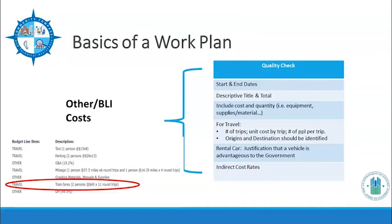Next, we have other BLI costs. BLI costs should have start and end dates and a descriptive title with a total. A notable change to the requirement is the segregation of travel costs. Your GTR will check for the number of trips proposed, the unit costs by trip, and the number of people per trip. We also want to see the destination and point of origin if known at the time of work plan development.